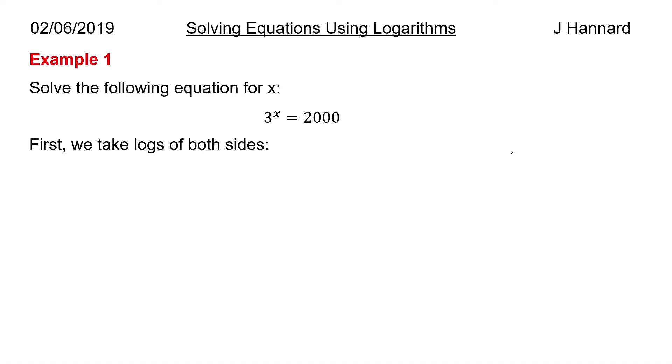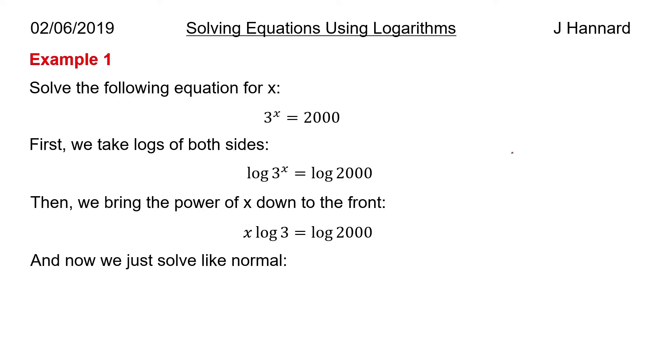First we take logs of both sides, so we say log of 3 to the x equals log of 2,000, and then we bring our log laws into place. Log of something involving a power, the power drops down to the front, so x log 3 equals log 2,000, and then we solve it like a normal equation. So x log 3 equals log 2,000, divide both sides by log 3, and you get x on its own. So x is 6.92 to 3 significant figures.